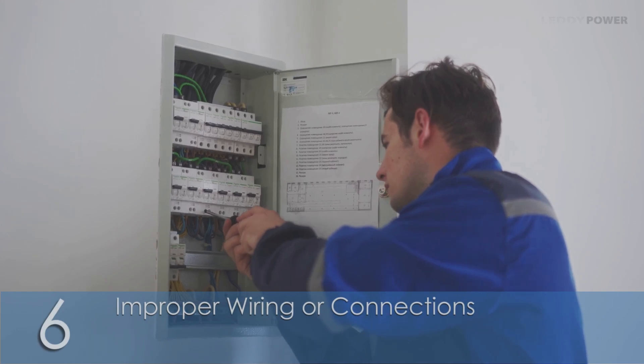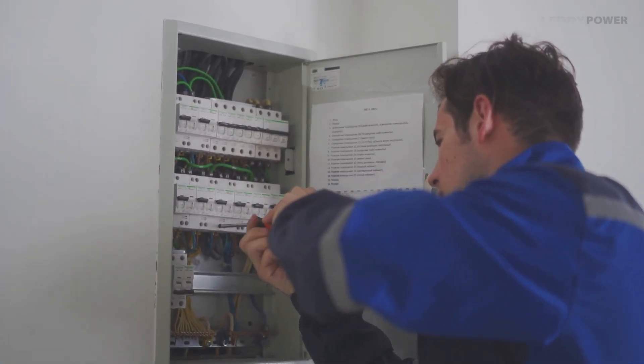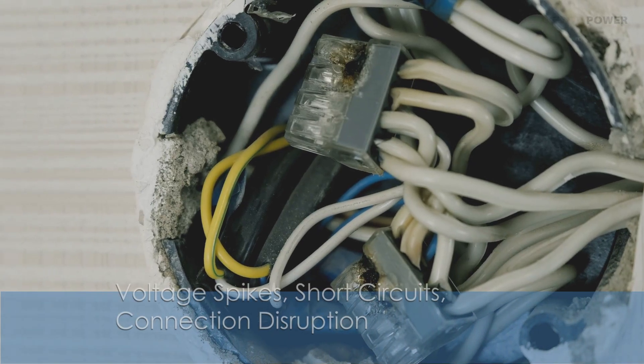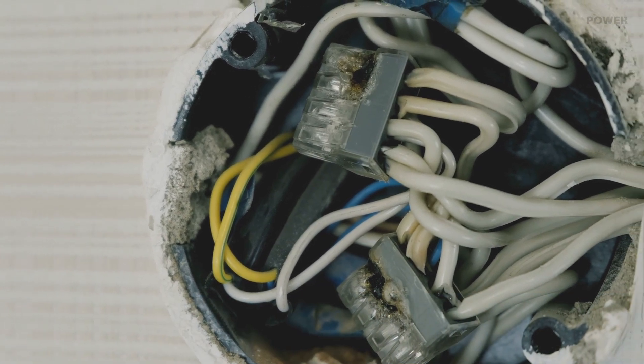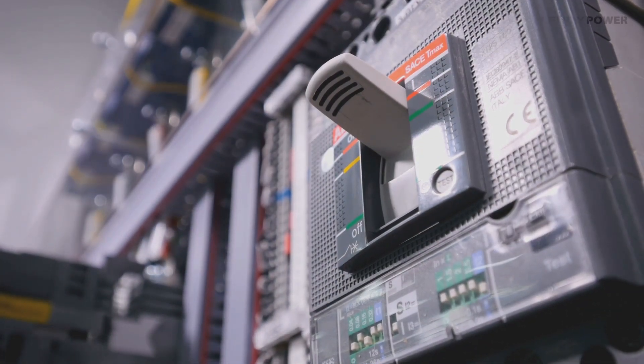Number six, improper wiring or connections. Defective wiring or connectors can contribute to issues such as voltage spikes, short circuits, connection disruption, and so on. These are among the issues that can cause the breaker to trip repeatedly.